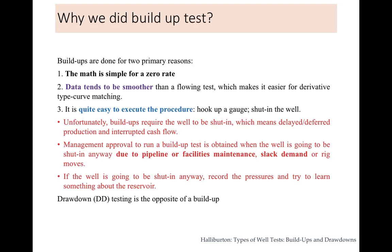This buildup data is very useful and there are strong reasons why we do this buildup test. Number one, the math is quite simple for zero rate — everybody would agree with this, because the rate we consider for buildup test is zero at the time of shutting. Whatever rate we consider for calculation purposes — the rate or rates of past productions — in Horner approximation we consider Q-last and the pseudo producing time.